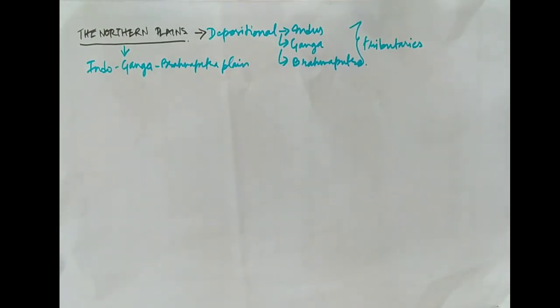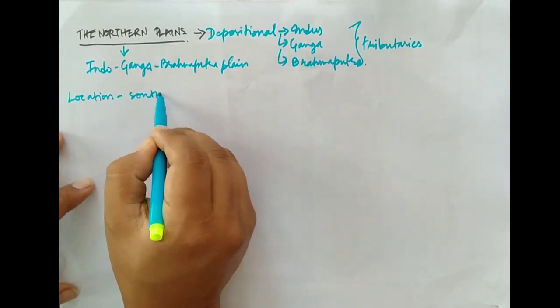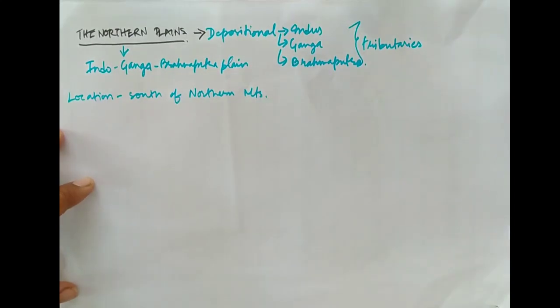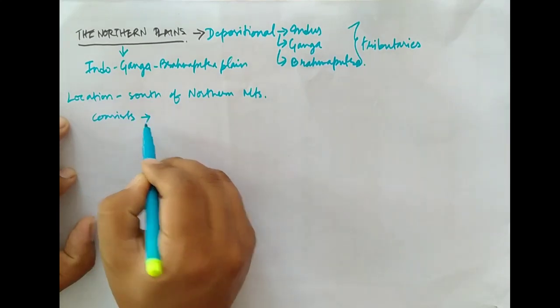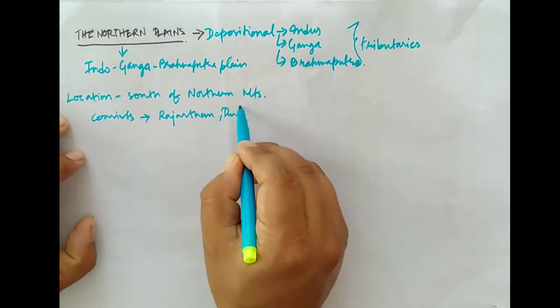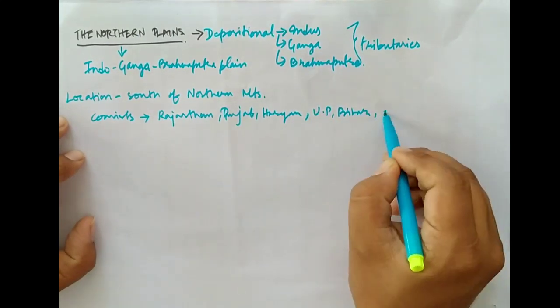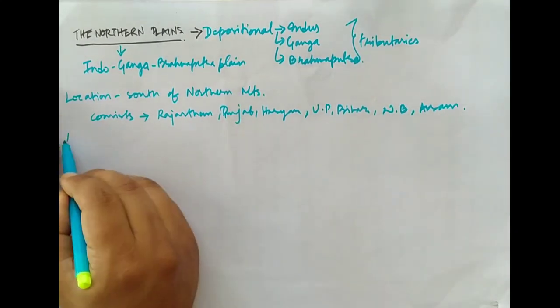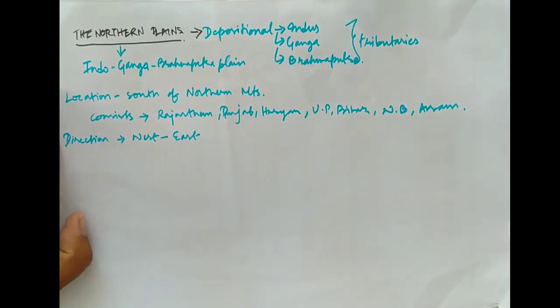Now let us discuss some characteristics of northern plains. Location: towards the south of the Shivalik mountains. The area consists of Rajasthan, Punjab, Haryana, Uttar Pradesh, Bihar, West Bengal, and Assam. The direction of the northern plains is from west to east. Area covered is more than six lakh square kilometers.